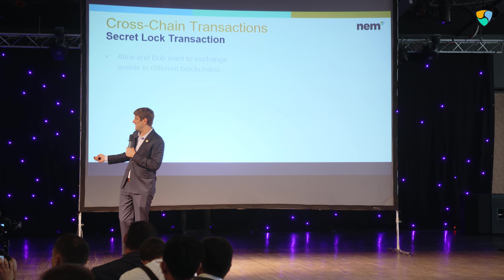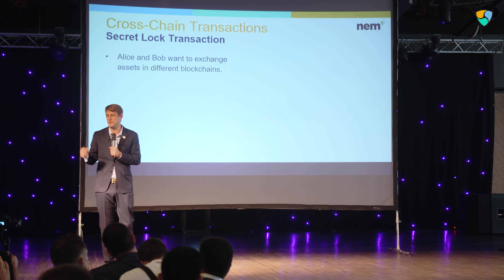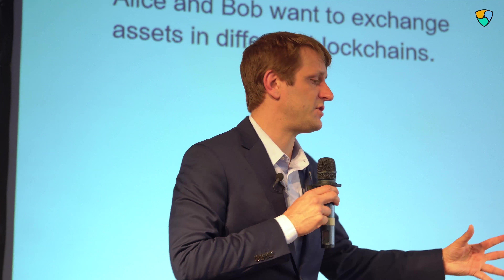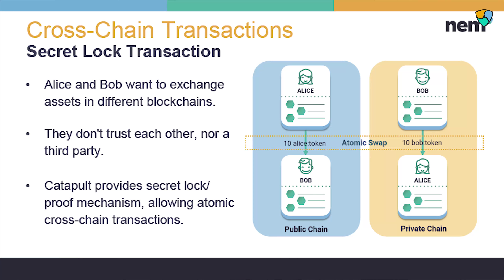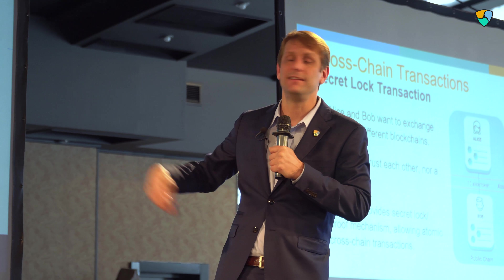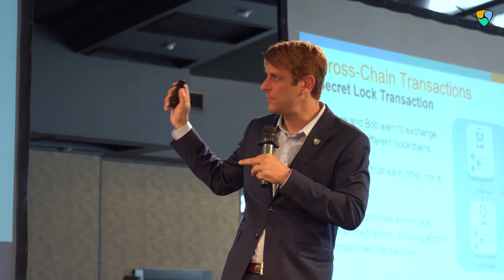Another powerful feature in NIM is cross-chain transactions — from any NIM chain to any other NIM chain. This is not NIM to Bitcoin or NIM to Ethereum; this is NIM to NIM, but it is trustless, easy, and wonderful to use. It works with a shared secret between two different chains. You can do public chain to private chain, private chain to private chain — however you want. You can even add advanced contracts like a house certificate into it.